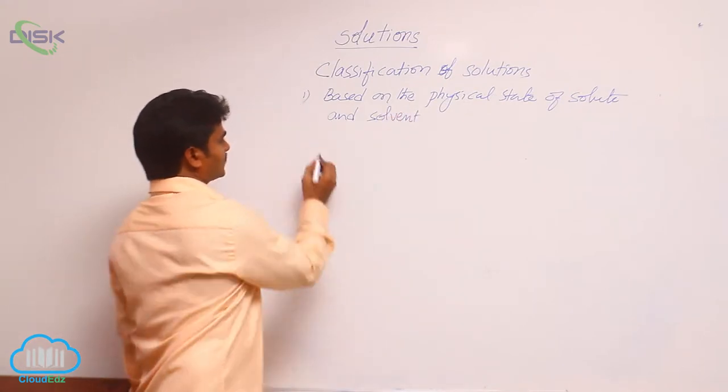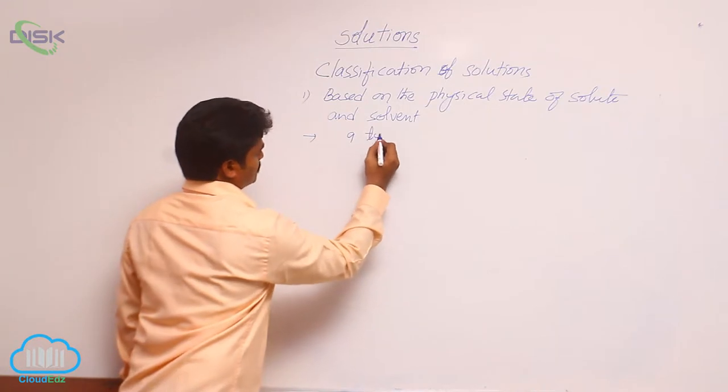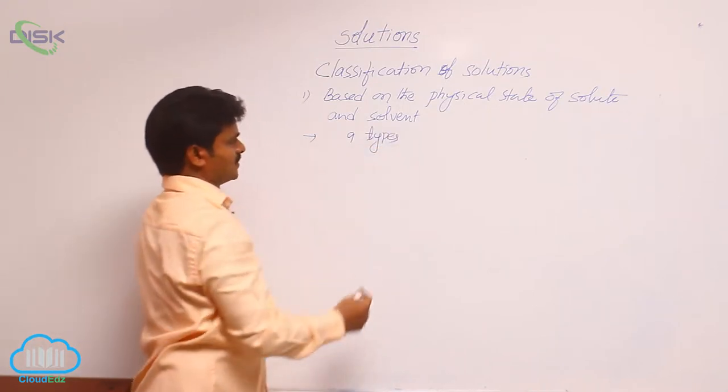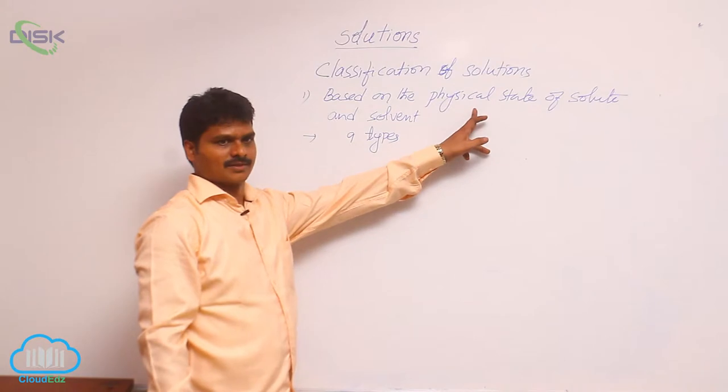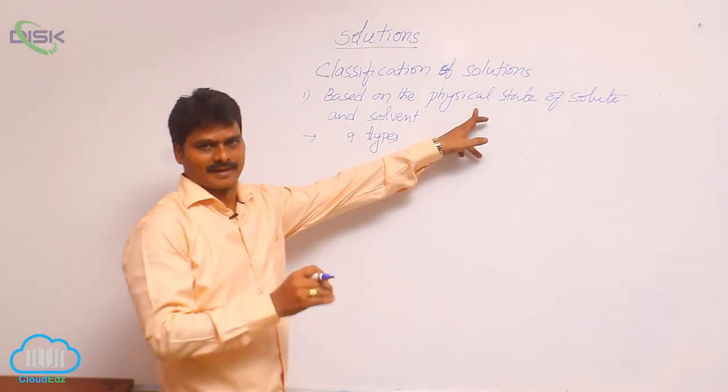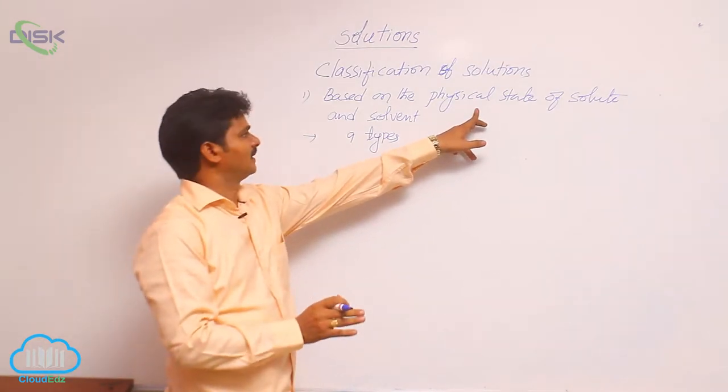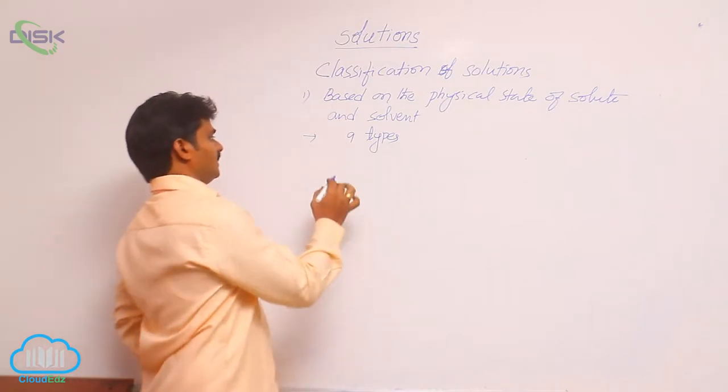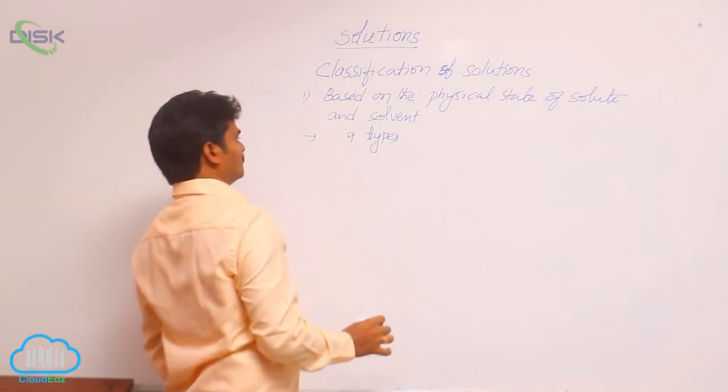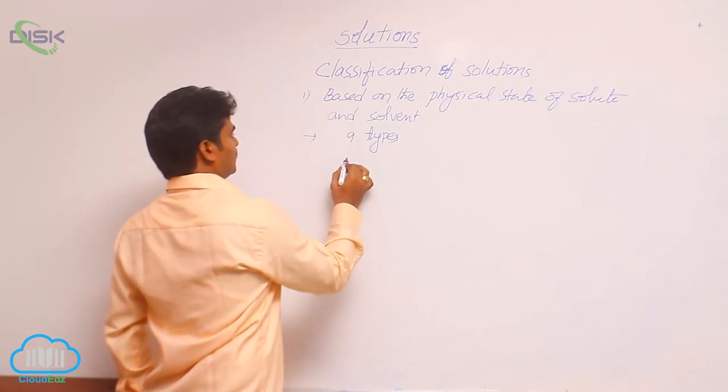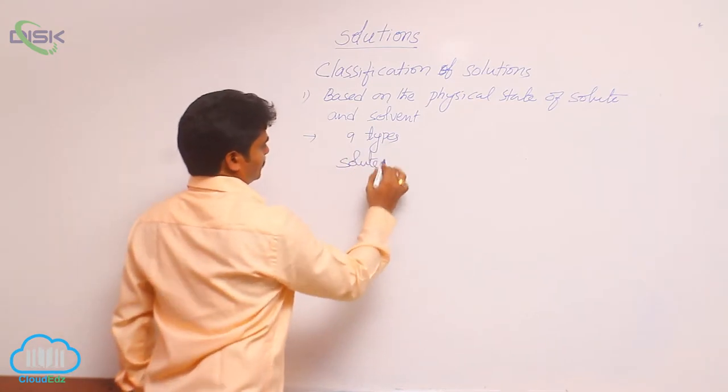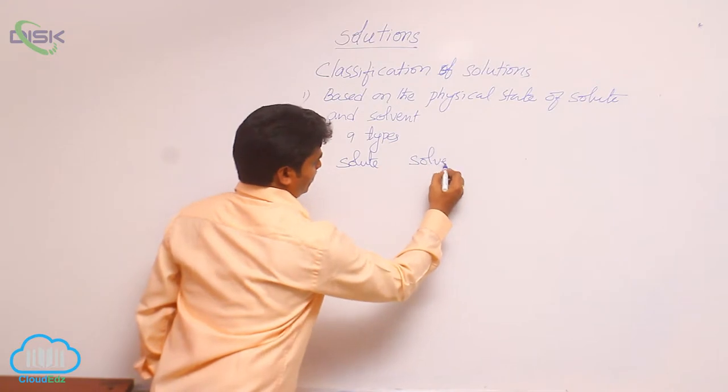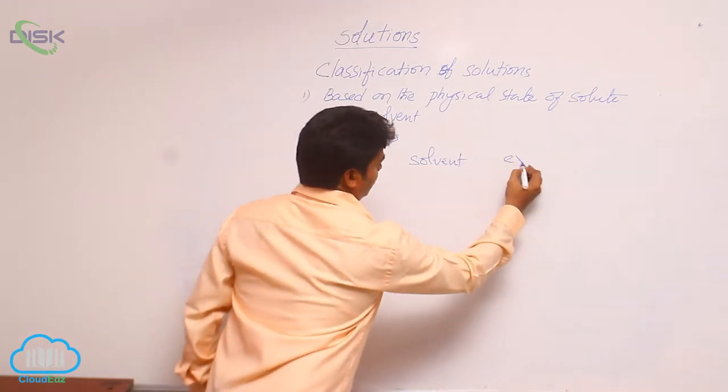In this category, we have total nine types of solutions. Physical state means whether it is solid or liquid or gas. Based on that, we have total nine types. Some examples for each type. Here, solute, solvent, and an example for it.